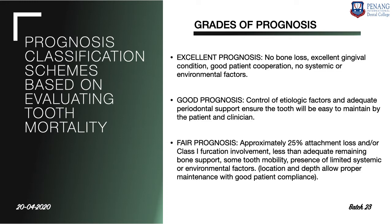Fair prognosis is given when there is approximately 25% attachment loss, with or without Class 1 furcation involvement, some mobility, and presence of environmental or systemic factors. Attachment loss is calculated from the cemento-enamel junction to the apex of the root. If about 25% of the attachment apparatus has been lost, the patient should be given a fair prognosis.